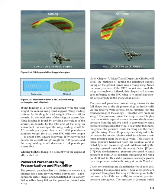Wing loading is a term associated with the total weight the Ram air wing must support. It is found by dividing the total weight of the aircraft in pounds by the total area of the wing in square feet. For example, the wing loading would be 2.0 pounds per square foot when 1,000 pounds — a common weight for a two-seat PPC with two people — is under a 500 square foot wing. If flying with one person, the aircraft weight might be 700 pounds and wing loading would decrease to 1.4 pounds per square foot. Gliding flight is flying in a descent with the engine at idle or shut off.